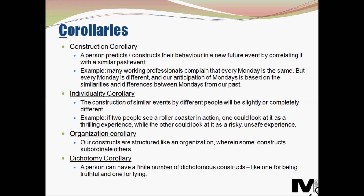The next type is the dichotomy corollary. A dichotomy between two objects or concepts refers to them being opposites to one another. Kelly proposed that a person can have a finite number of dichotomous constructs. Just like we have a construct for being truthful, we will have a construct for lying. Dichotomous constructs are important to consider in order to predict future events correctly.